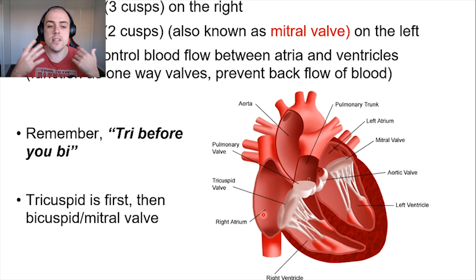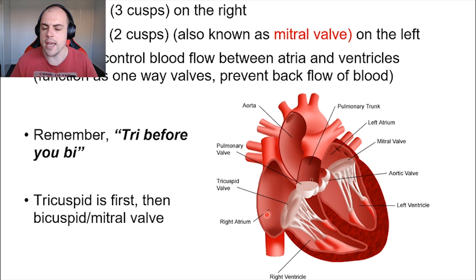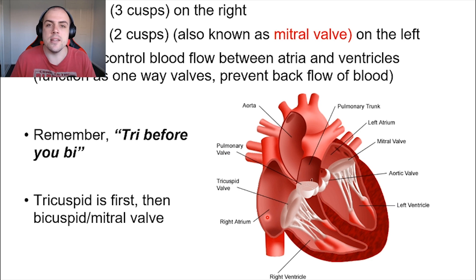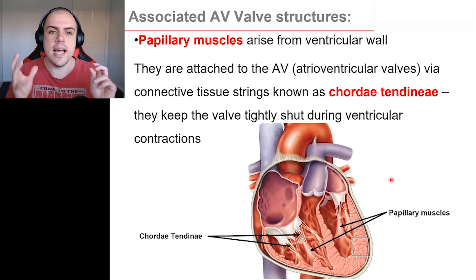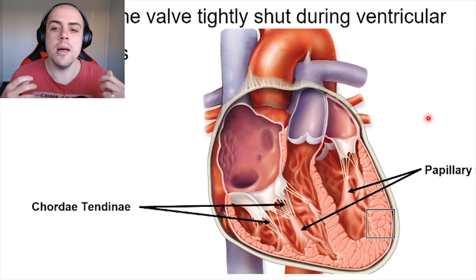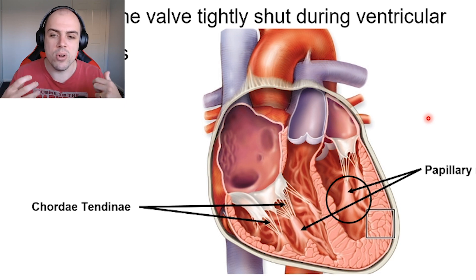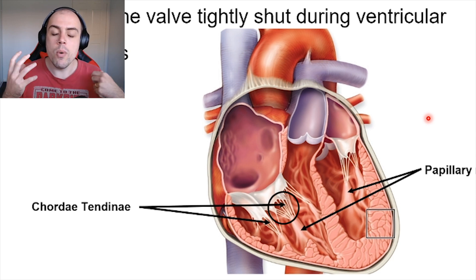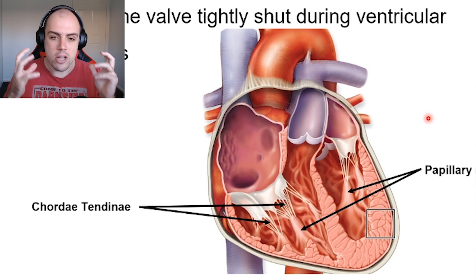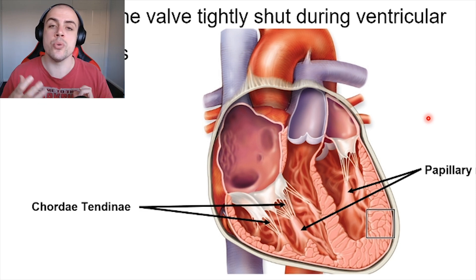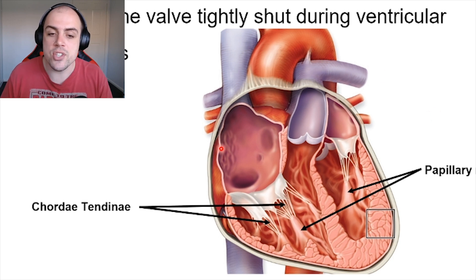This is where our 'tri before bi' rule comes into effect: the tricuspid valve is on the right-hand side and the bicuspid, or mitral valve, is on the left-hand side. Attached to these valves are papillary muscles, which are connected via the chordae tendineae. These structures essentially help hold the valves in place, especially during ventricular contraction.